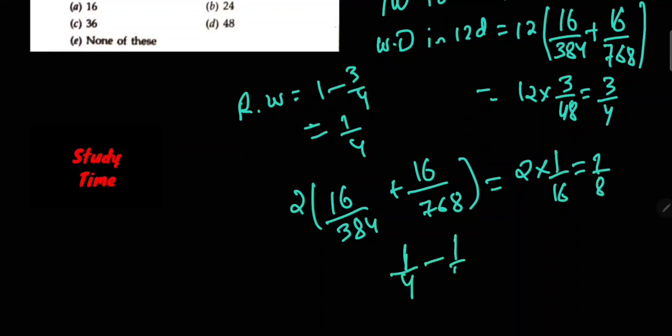1/4 minus 1/8 gives us 1/8 remaining. So 384 × 1/8...